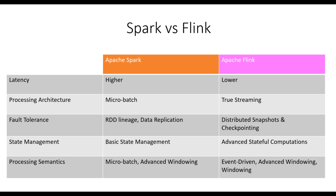Lastly, let's discuss processing semantics. Spark supports micro-batch processing and advanced windowing, whereas Flink offers event-driven processing, advanced windowing, and additional windowing options. Flink's event-driven approach enables more precise control over time-based operations, allowing for more sophisticated processing semantics. Flink provides a robust and powerful platform for handling real-time data streams.